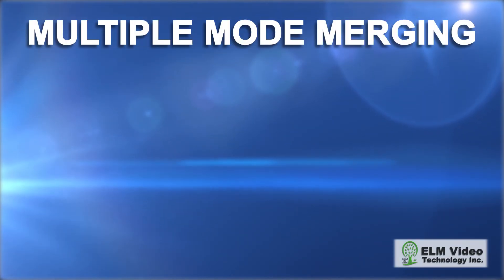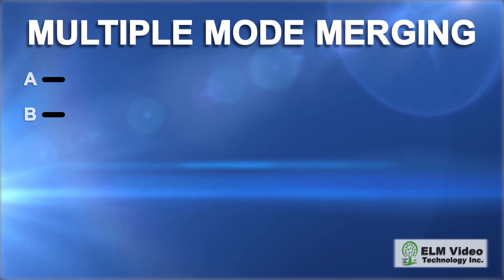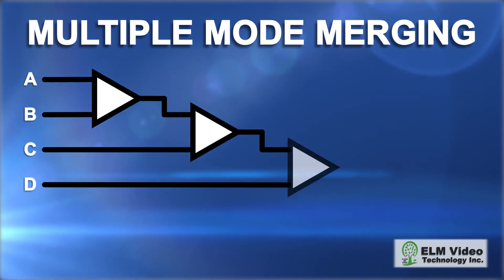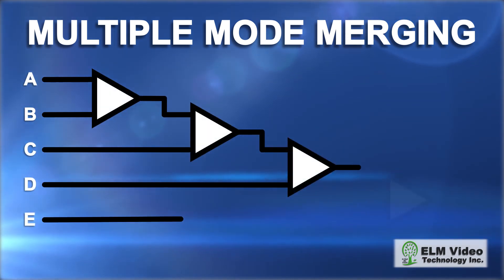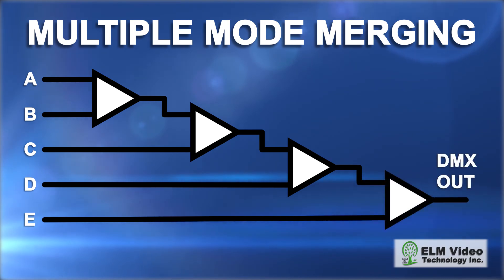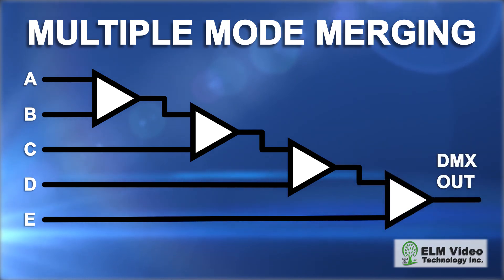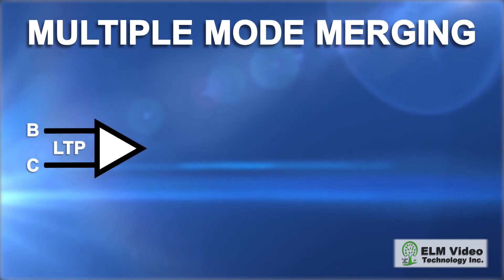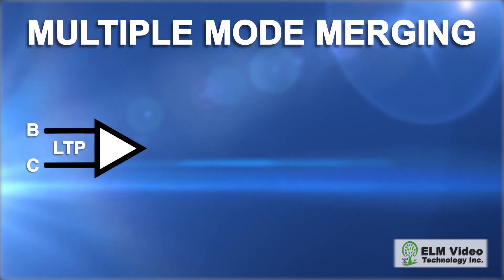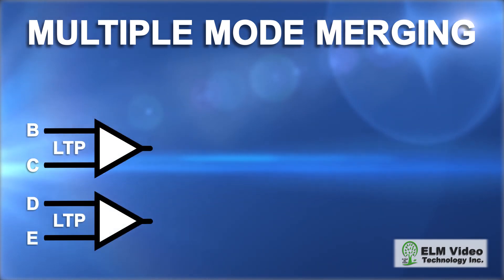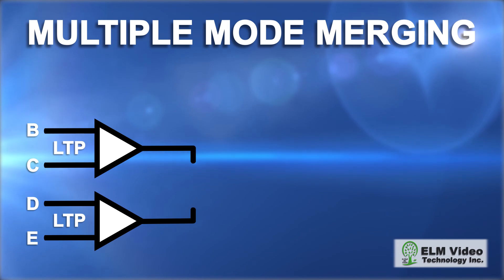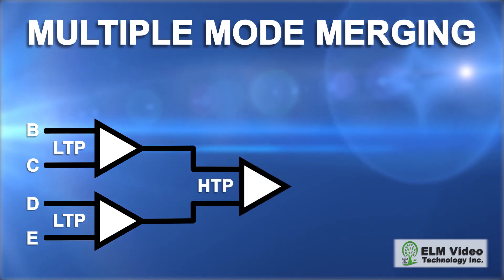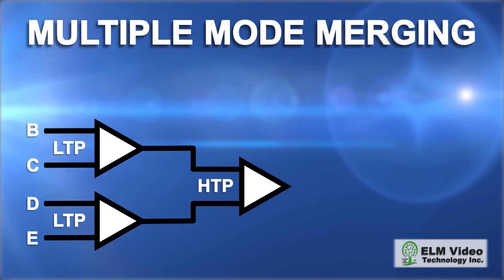With the versatility of our merger functionality, several DMG units or circuits can be combined together to merge additional inputs and merge with multiple modes and functions. For example, two DMGs can be configured to merge multiple universes into one using the LTP mode. The combined outputs could then be merged with another unit in the HTP mode.